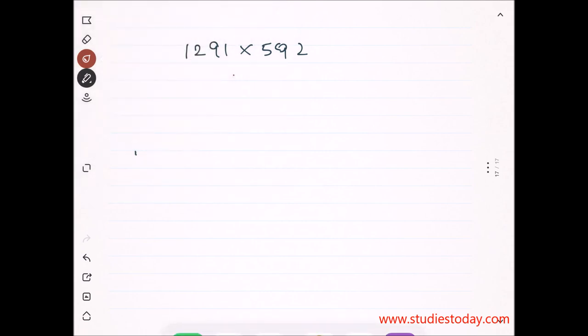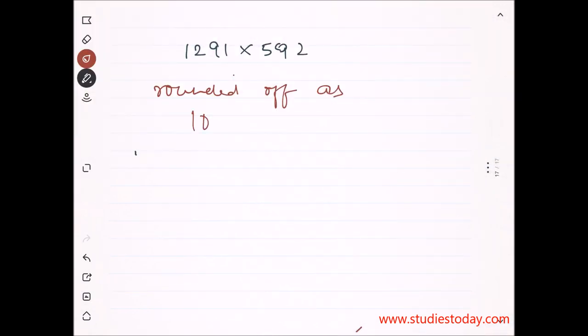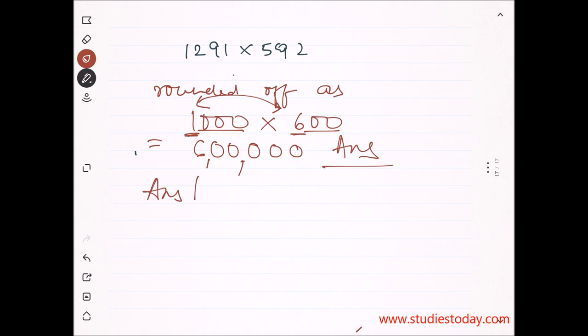So 1,291 into 592 is estimated as 1,000 into 600, which equals 6,00,000. That's 6 lakh. This is your answer.